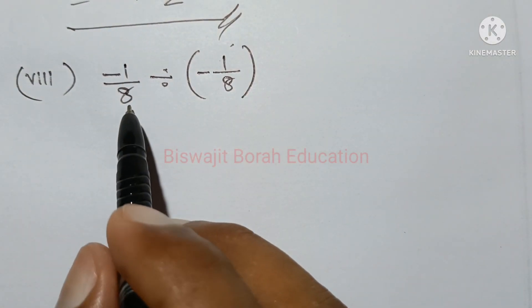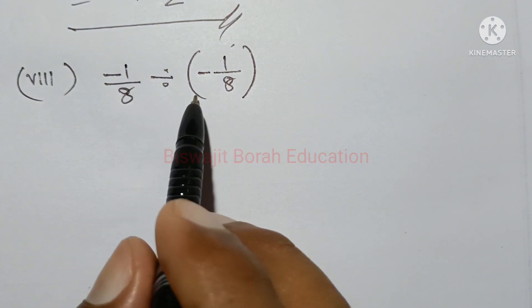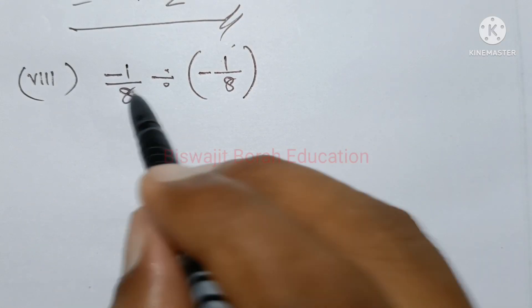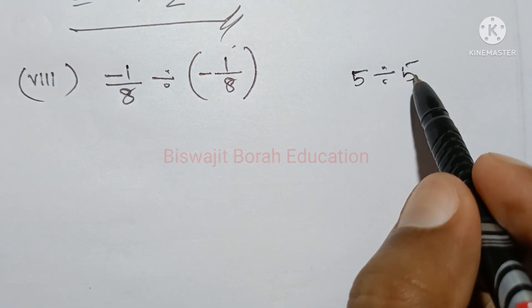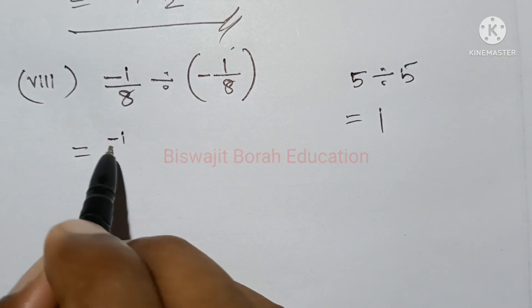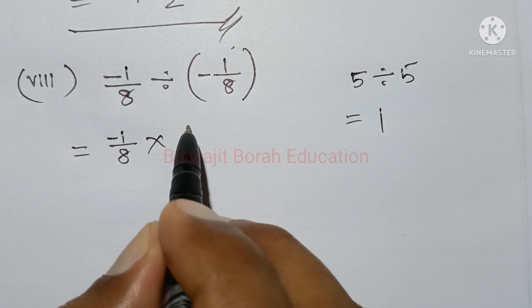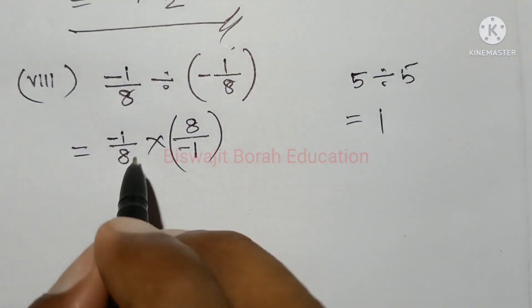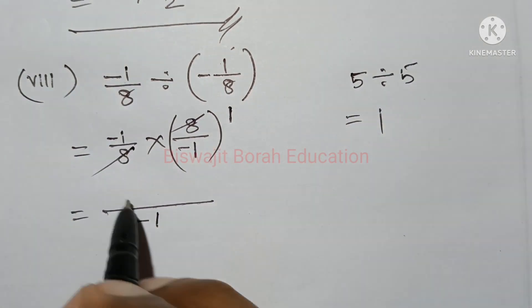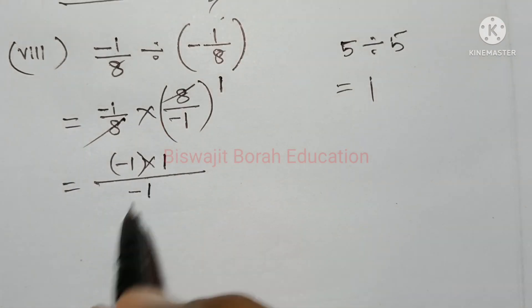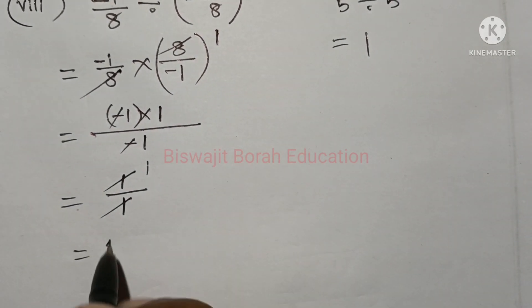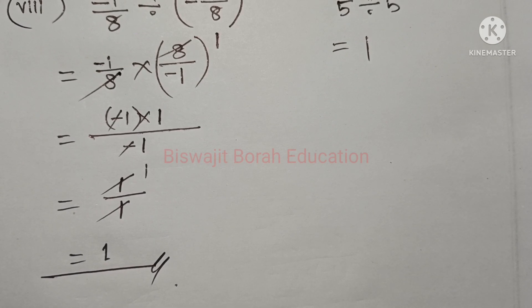Now the last number: minus 1 by 8 divided by minus 1 by 8. So the answer is 1. We have minus 1 by 8 and minus 1 by 8, which is minus 1 by 8. So the answer is 5 divided by 5. So 8 by minus 1: here are the answers, then we have minus 1 by 8 and minus 1 by 8. This will be minus 1 by 8. So the answer is just 1. Thank you so much for watching.